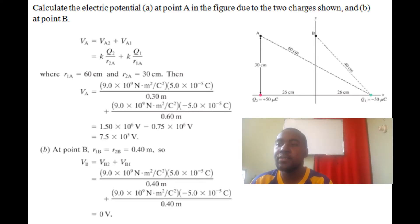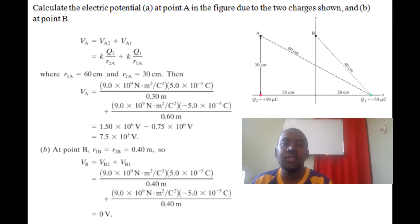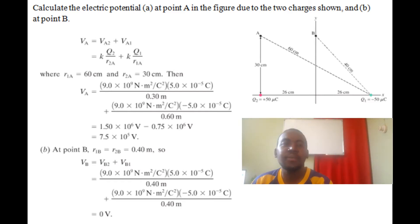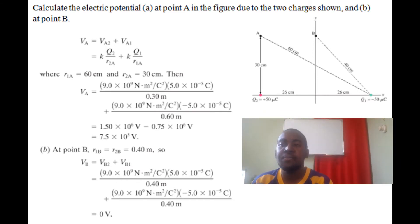We substitute the values: the distance of q1 is 6 centimeters, divided by 100 to get meters, and r2 is 30 centimeters, giving 0.30 meters. The final answer is 7.5 times 10 to the 5 volts. Now for point B.